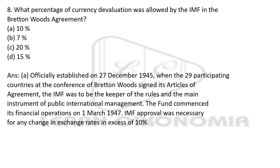What percentage of currency devaluation was allowed by the IMF in the Bretton Woods Agreement? Options are 10%, 7%, 20%, 50%. The right answer is option A — 10%. The Bretton Woods system was officially established on 27th December 1945, with 29 participating countries signing the Articles of Agreement. IMF approval was necessary for any exchange rate change in excess of 10%.